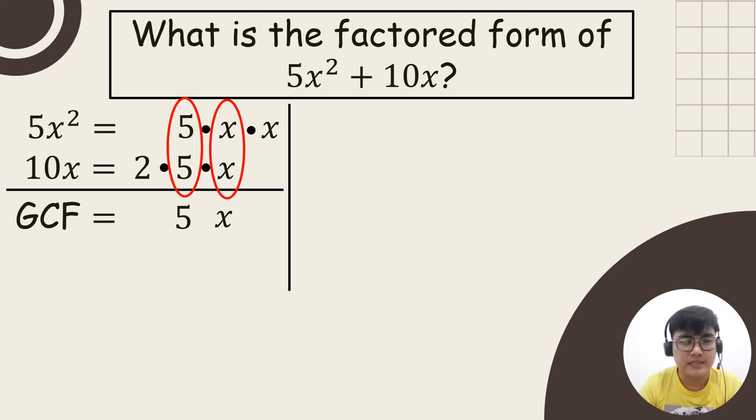From the given factors, they both have 5 and the variable x. We are going to get the product of 5 and x. 5 and x will be our greatest common monomial factor. The greatest common monomial factor is 5x.